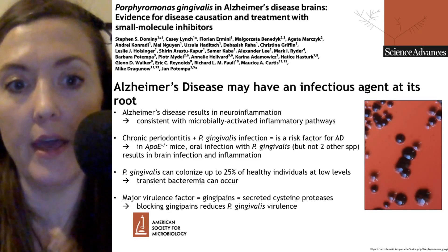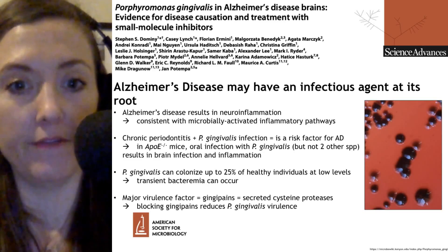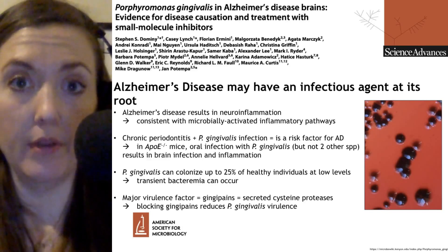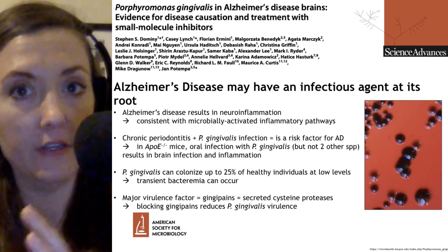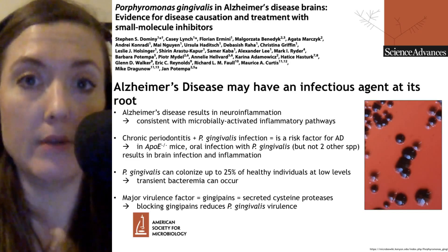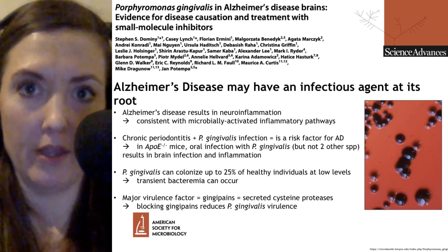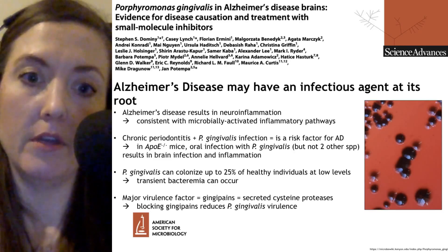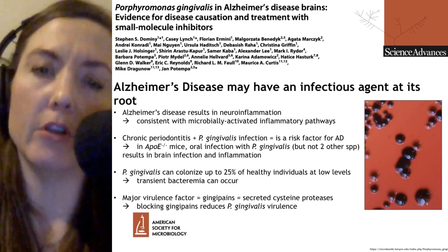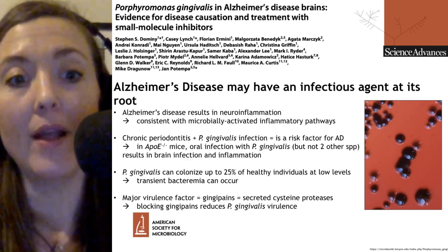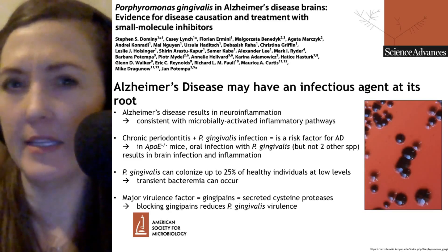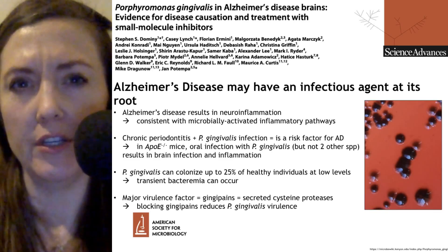It's been well described that patients who have Porphyromonas gingivalis infection, which can cause chronic periodontitis, can also be at greater risk for Alzheimer's disease. This has been shown not only with human associations looking at patient populations and cohorts, but also in mice. In mice that do not have the APOE gene — the gene typically associated with greater risk for Alzheimer's — when given P. gingivalis orally, they can come down with Alzheimer's disease or a similar mouse version with neurodegeneration, memory impairment, and brain inflammation. This effect is specific to P. gingivalis; other tested species did not produce the same brain inflammation and neurodegeneration.